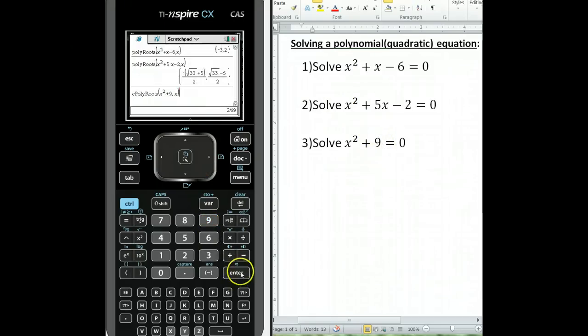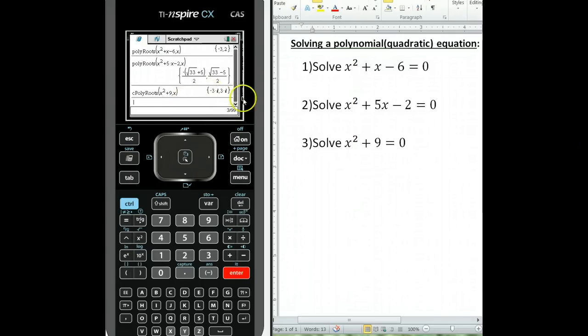Hit OK, enter, and you can see the calculator found the two roots, negative 3i and positive 3i.